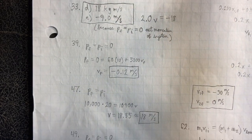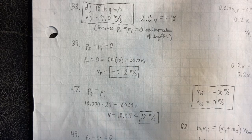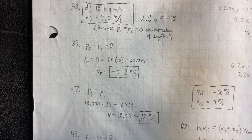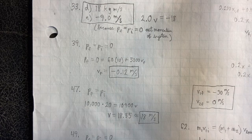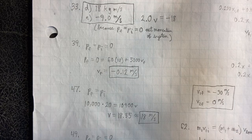Number 47, similar setup. PF equals PI. So 10,000 times 20 equals 10,900V. The 10,900 comes from the fact that the mass is increased.